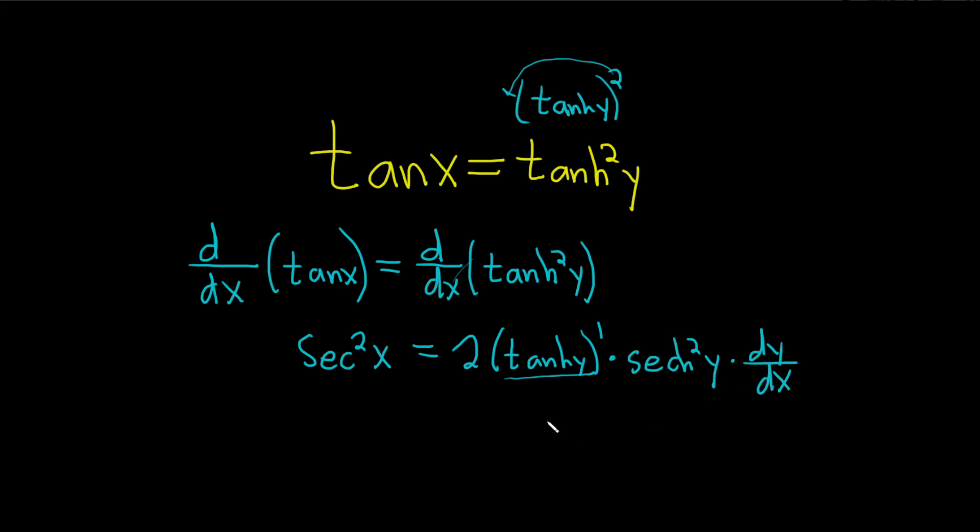Okay, the last thing to do is clean this up a little bit. Let's get rid of all of this. So we're going to divide both sides by two tanh y and then hyperbolic secant squared y. Same thing here. Divide by two hyperbolic tangent of y, hyperbolic secant squared of y.